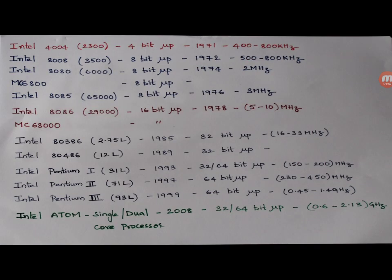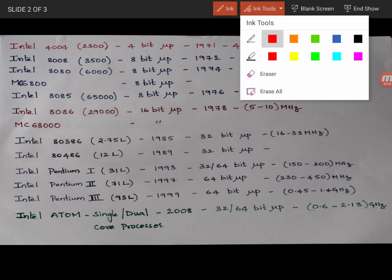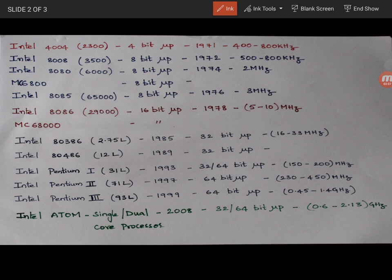So let's look into the family of Intel along with the other microprocessors which have evolved over the period. So the first microprocessor which was commercially available was Intel 4004. It was consisting of 2300 transistors and it is a 4 bit microprocessor. A 4 bit microprocessor means the ALU of the microprocessor is capable of processing the 4 bit data. And it was released in the year 1971 and it was operating at the clock frequency 400 to 800 kilohertz. So this is the clock frequency and it was primarily used in calculators.